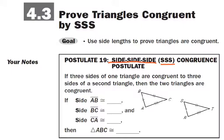Now, this is a postulate, and it is true. If three sides of one triangle are congruent to three sides of a second triangle, that's all you need to show that the triangles are congruent. So if segment AB is congruent to segment RS, segment BC is congruent to segment ST, and segment CA is congruent to segment TR, then you can say that the two triangles are congruent.